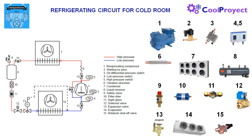In number 2 we have the starting bypass, which we use normally in compressors of more than 10 horsepower. The goal is to allow the compressor to start without charge by bypassing the suction and discharge line for some seconds at the beginning. This way we get less absorbed current and we lengthen the life of the compressor. For the bypass device we use normally a small solenoid valve.